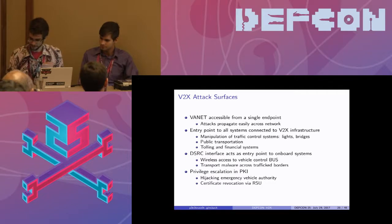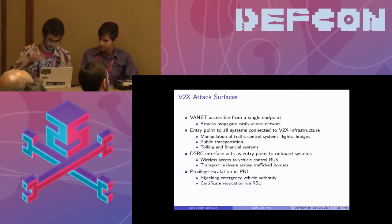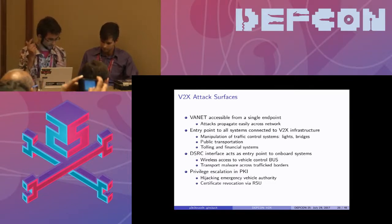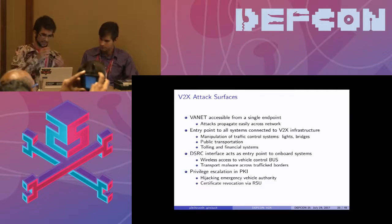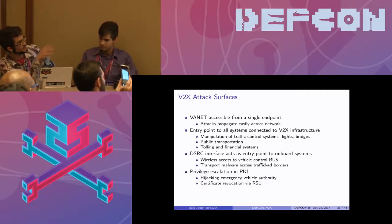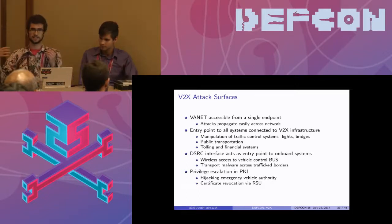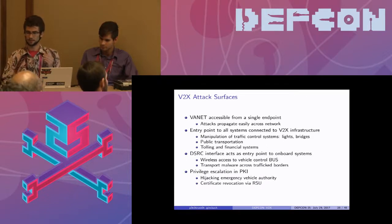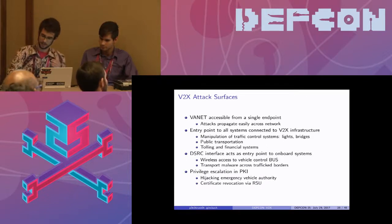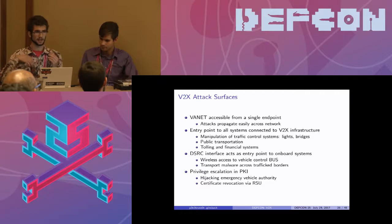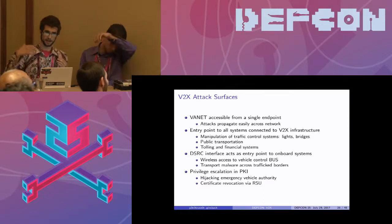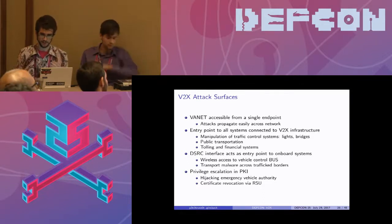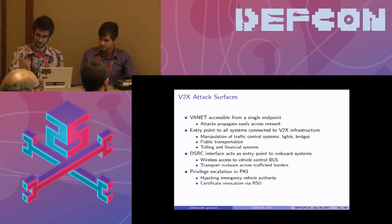I want to get into the code here since we're pretty short on time. Big attack surfaces: the nature of the VAnet is that it's accessible from a single endpoint. By compromising one endpoint, you can propagate a message over the entire network in this distributed mesh networking fashion.